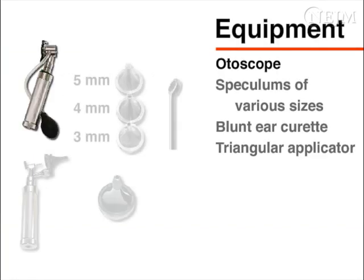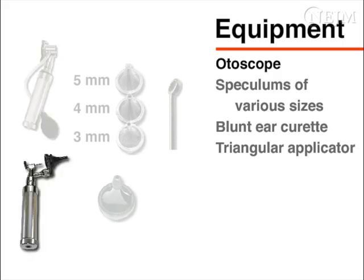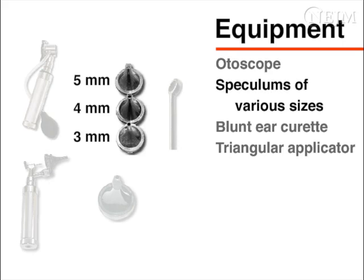For pneumatic otoscopy, you will need an otoscope with a diagnostic head that has an attached rubber bulb and a movable lens. Cerumen removal is most readily accomplished using an otoscope with a surgical head, but a diagnostic head also may be used. You should use the largest otoscopic speculum that fits comfortably into the external auditory canal; for very large canals, soft tip speculums may be needed.